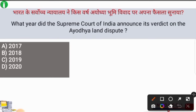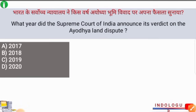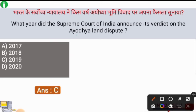What year did the Supreme Court of India announce its verdict on the Ayodhya Land Dispute? The correct answer is option number C, i.e. in the year 2019, the Supreme Court gave its final verdict on the topic of Ayodhya Ram Mandir.